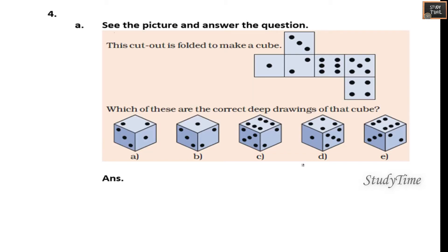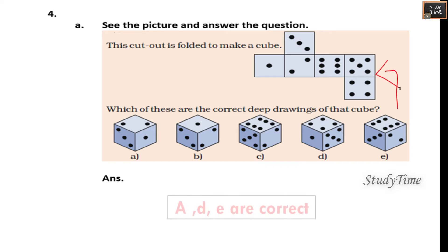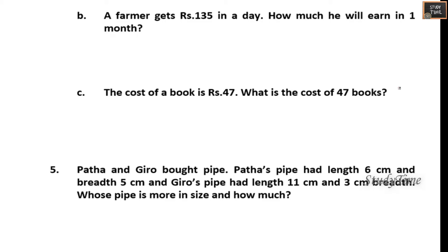See the picture and answer: which of these are the correct deep drawing of this cube? The answer is A, D, E. Next, a farmer earns rupees 135 in a day.